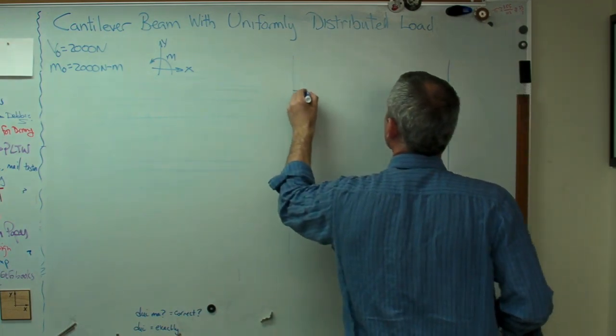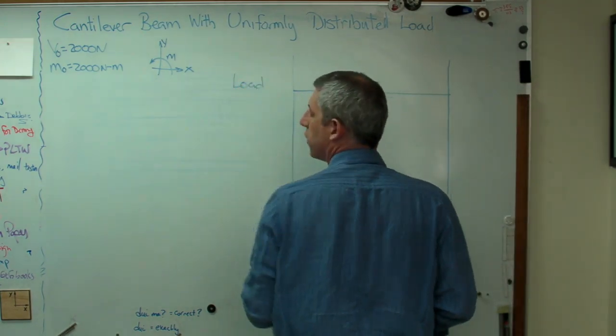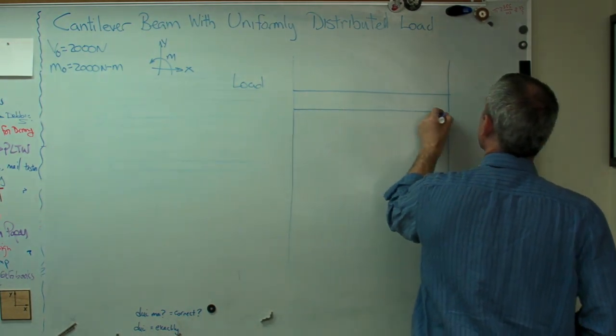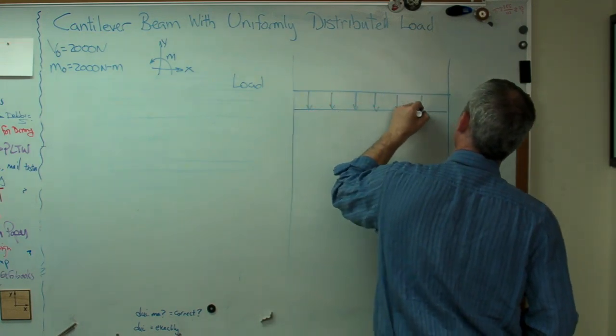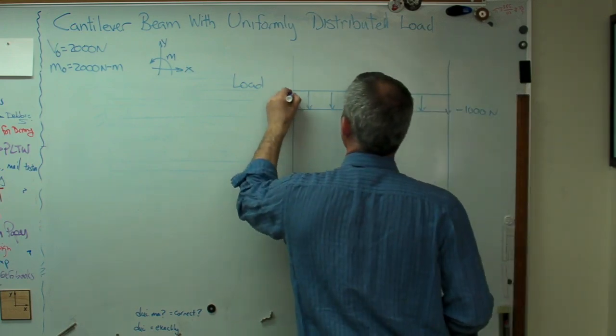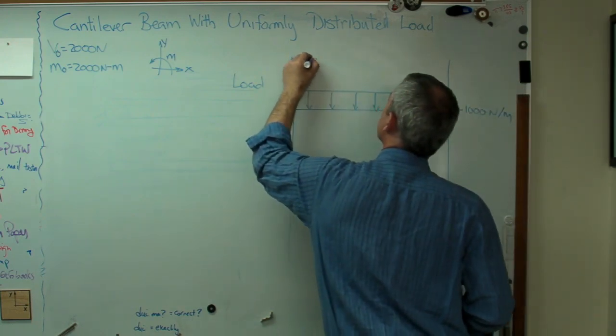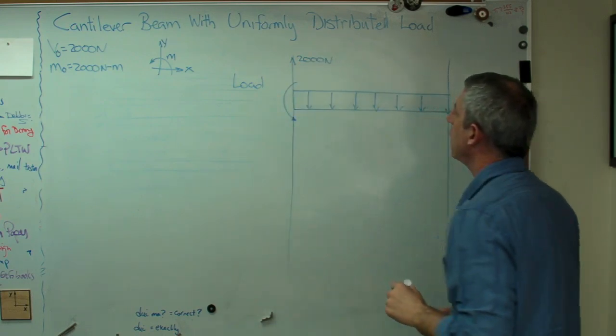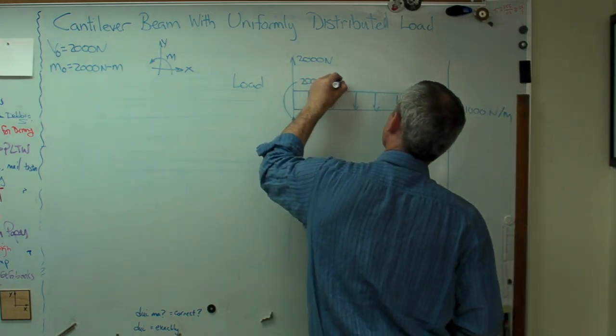All right. So let's draw this. Let's draw the loads we had from our free body diagram. Let's see. There's my distributed load down. That's minus 1,000 newtons per meter. Now, I also had 2,000 newtons up. And I also had a reaction moment, which was 2,000 newton meters.